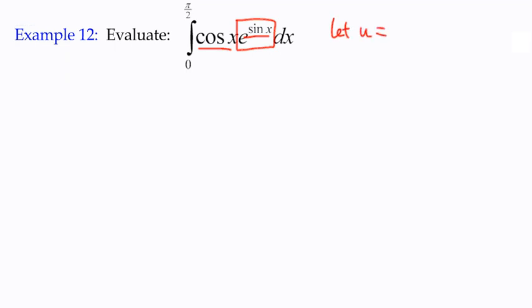So let u equal the inside function of this composite thing, which is sine x. We can go ahead and differentiate that to get du by dx is cos x. We can multiply it by dx on both sides and we get du equals cos x dx.